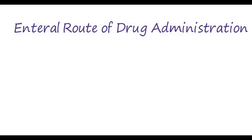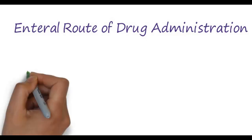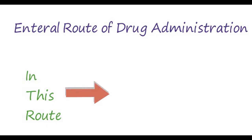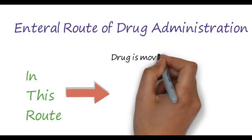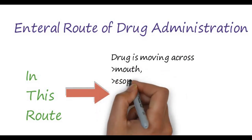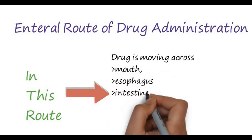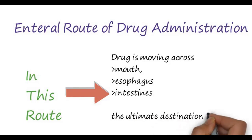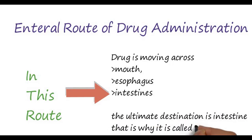In this video we are going to discuss about the enteral route of drug administration, which is the very basic route of drug administration. In this route, the drug moves across the GIT — starting from the mouth, esophagus, and intestine. The ultimate destination of the drug is the intestine, which is why it is called enteral, meaning towards or inside the intestine.